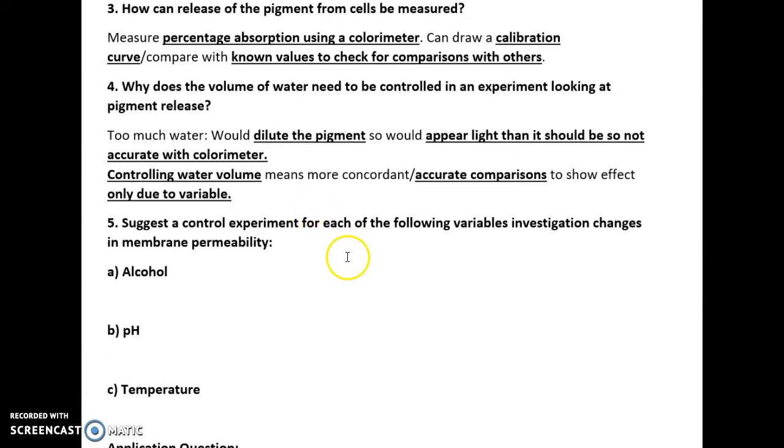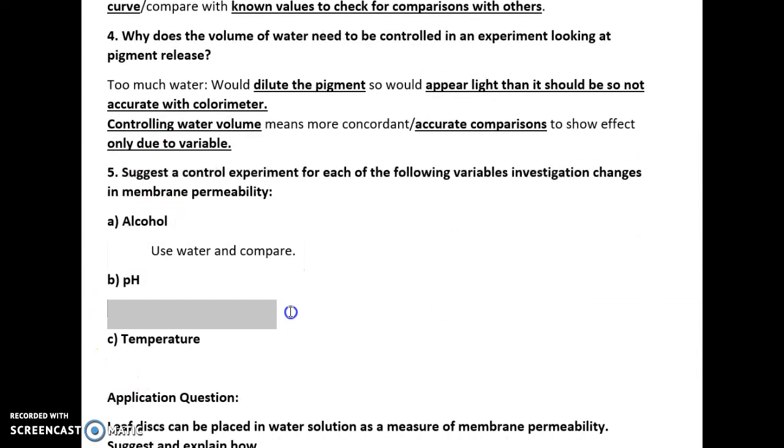Suggest a control experiment for each of the following variables which measure changing membrane permeability. There's a common trend with all these answers: you need to add water and compare. For alcohol, add water and compare. For pH, it's water as it is neutral and compare. For temperature, it will be to simply do it at standard room temperature and compare.